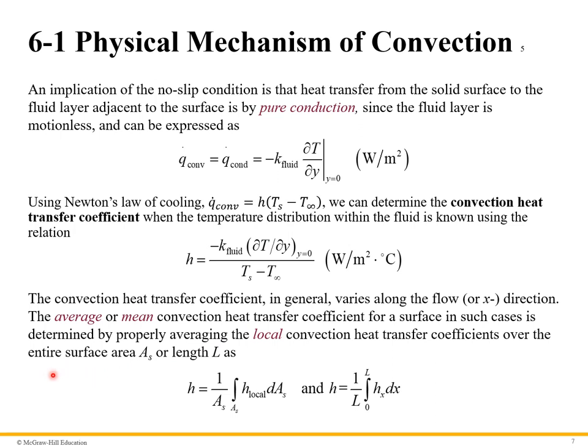The convection heat transfer coefficient in general varies along the flow direction. We can take the average or mean heat transfer coefficient by taking the integral of the local one and integrating over the area. For one-dimensional flow, it becomes just a one-dimensional integral.